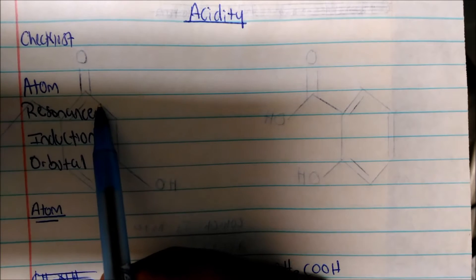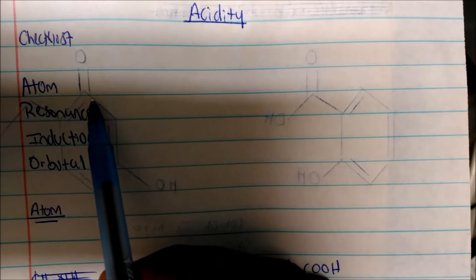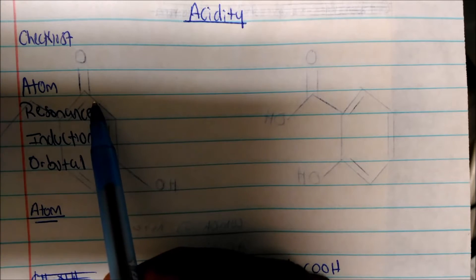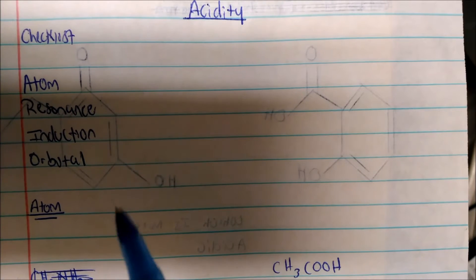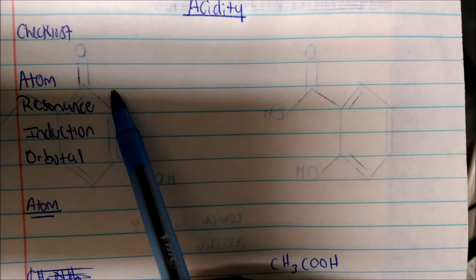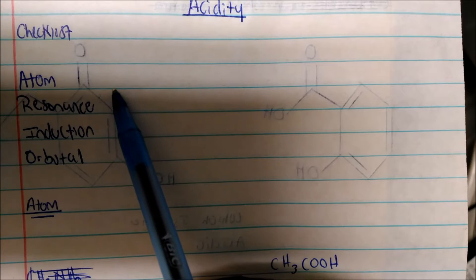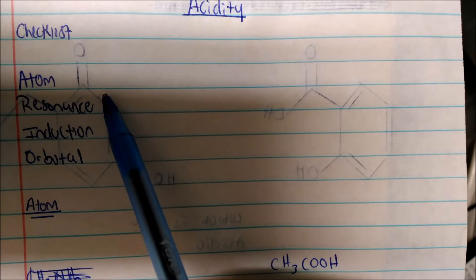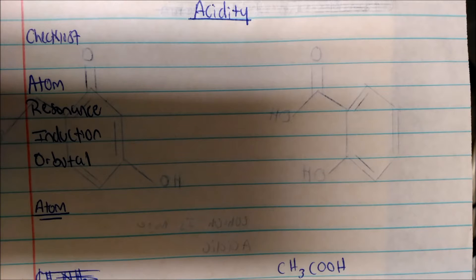The first thing you actually do is draw the conjugate base. That is just the first thing you do to determine which proton is acidic, or which is the more acidic compound given two or more. You want to look at what atom the charge is on. Generally speaking, if you have a negative charge on the more electronegative atom, the more stable the conjugate base is, and therefore the more acidic the molecule may be.